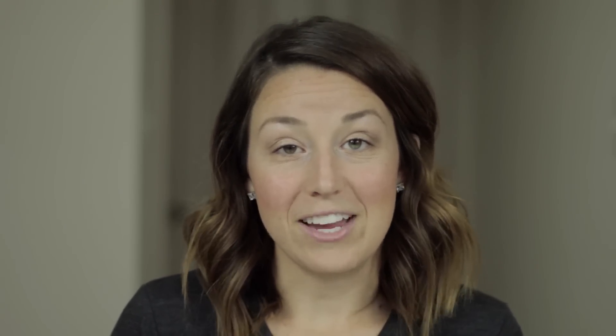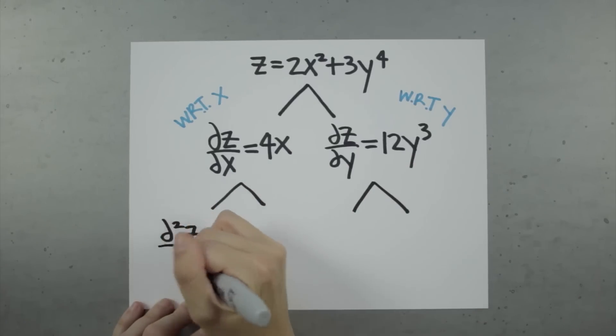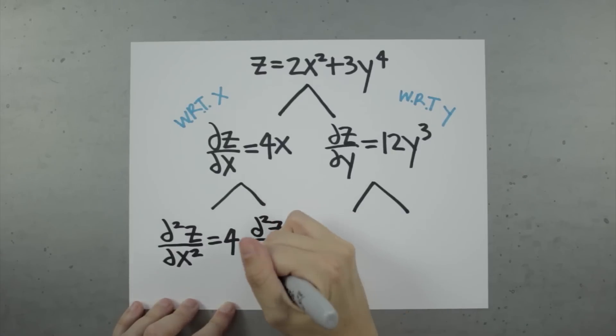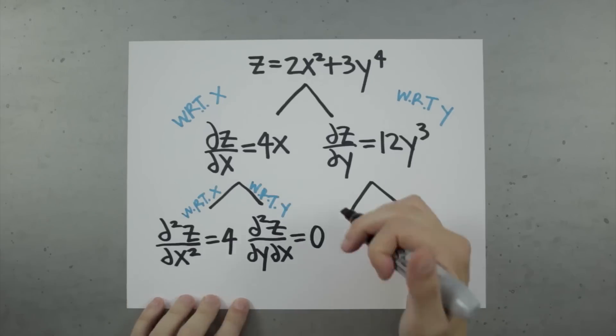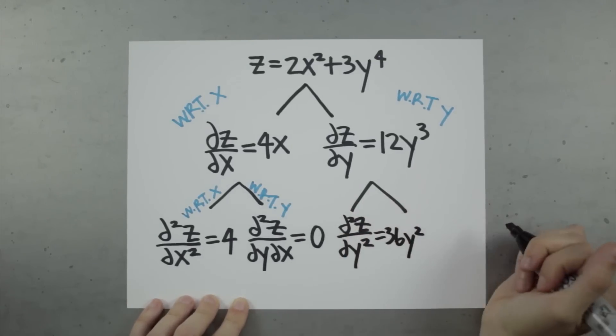Partial derivatives can be first order, second order, or higher order. We just found the first order partial derivatives for z with respect to x and y, because we took the derivative just once with respect to each variable. If we wanted to find second order derivatives, we would take the derivative of the first order derivatives. Because we're dealing with partial derivatives, we can take the partial derivative of both of these with respect to both variables, to give us four second order partial derivatives.